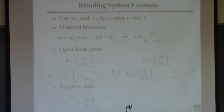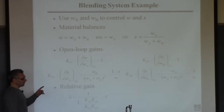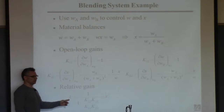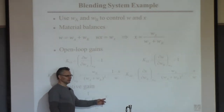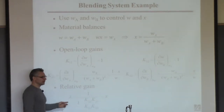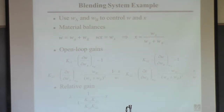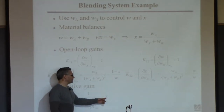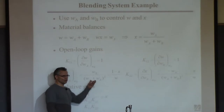What does that tell you? If you want to use WA to control W and WB to control X — pairing U1 and Y1 and U2 and Y2 — this lambda should be close to 1. Is it close to 1? It depends on the mole fraction you're trying to achieve. If you're trying to achieve a mole fraction with a lot of A, that will be a high number like 0.8 or 0.9, and that will be a good pairing. Otherwise, you should use the other pairing. It depends on the actual mole fraction you're trying to achieve.